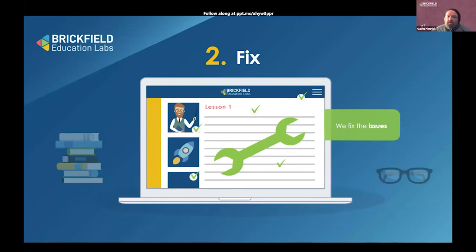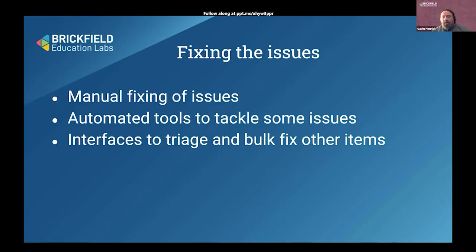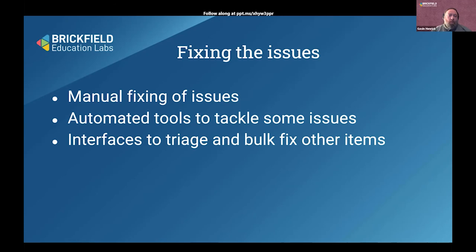Once you know your issues and have your priorities, you need to fix them. Some will require manual fixing — going back to the original Word document or PowerPoint, where Microsoft has excellent training materials for creating more accessible documents, then exporting to PDF or linking from Office 365. You'll also have automated tools to either mitigate or fix some issues, though be careful with some of those widgets you pay subscriptions for. And you want interfaces to triage and bulk fix — there's no point telling a teacher they have 5,000 issues without saying 'but we're going to help you solve 80% of them.'